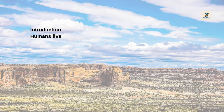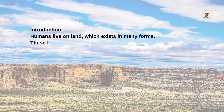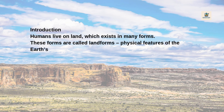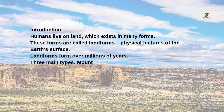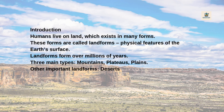Introduction: Humans live on land, which exists in many forms. These forms are called landforms — physical features of the Earth's surface. Landforms form over millions of years. The three main types are Mountains, Plateaus, and Plains. Other important landforms include Deserts. Landforms influence climate, vegetation, wildlife, culture, and human activities.